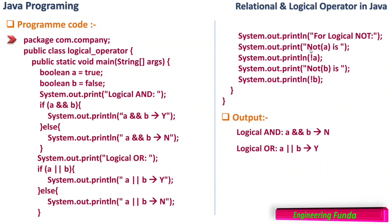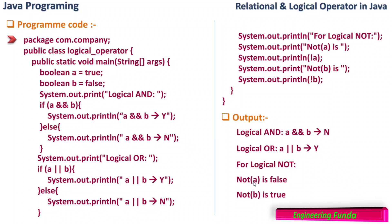For logical NOT: not of a — since a is true, not of a is false. Not of b — since b is false, not of b is true. The output confirms: 'not of a is false because a is true' and 'not of b is true because b is false'. These operators are very helpful in writing Java programs, so we must remember and use them wisely. Thank you for watching — stay tuned for more videos on Java programming.